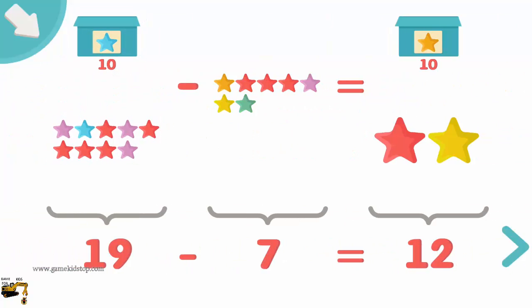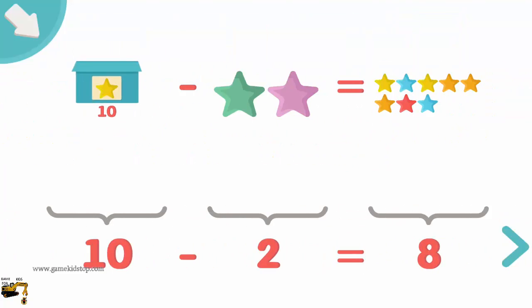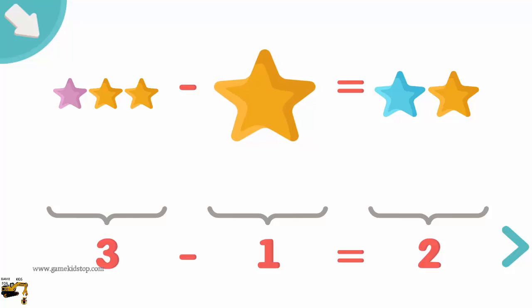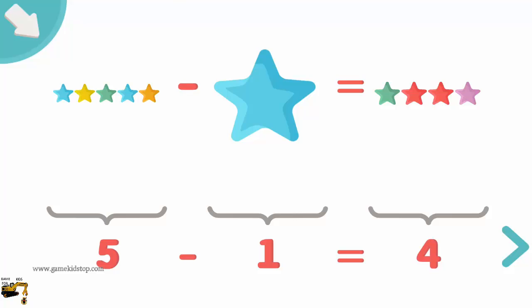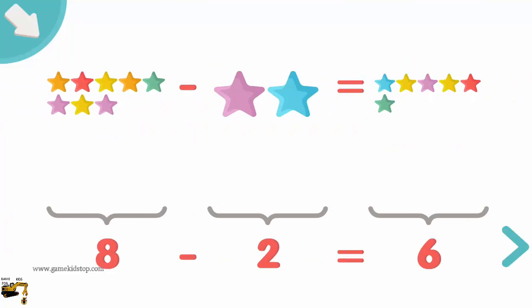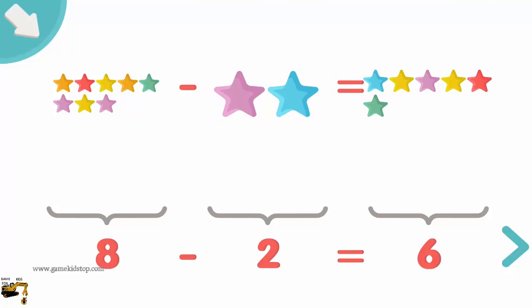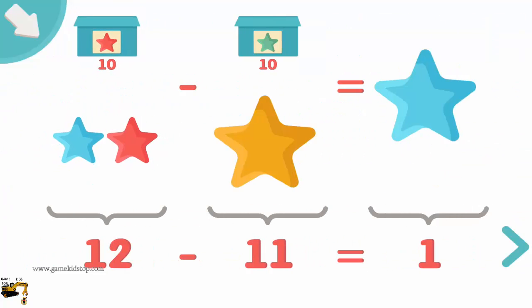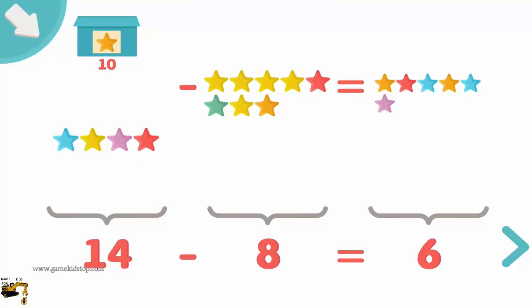19 minus 7 equals 12. 10 minus 2 equals 8. 2 minus 0 equals 2. 3 minus 1 equals 2. 5 minus 1 equals 2. 6 minus 5 equals 1. 8 minus 2 equals 6. 11 minus 2 equals 9. 12 minus 11 equals 1. 14 minus 8 equals 6.